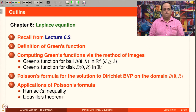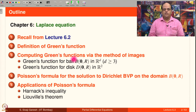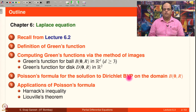The outline of this lecture is as follows. We will recall certain things from lecture 6.2, namely fundamental solutions and their properties. Then we define Green's function and compute Green's functions via the method of images for a ball in R^d when d is greater than or equal to 3. A ball is a disk when d equals 2. Then we write Poisson's formula for the solution to the Dirichlet boundary value problem on these domains. As an application of Poisson's formula, we will prove Harnack's inequality, and a further application of Harnack's inequality is Liouville's theorem.